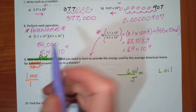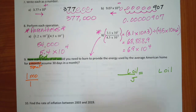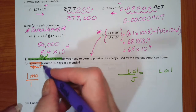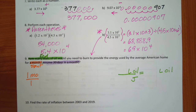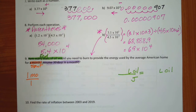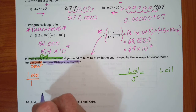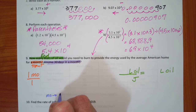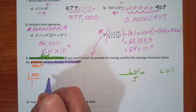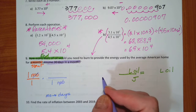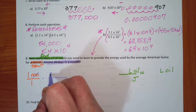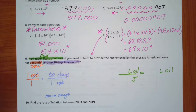There's a note in the problem: assume there are 30 days in a month — so that's going to come in handy. I'm going to convert the month to days. I put the month on the bottom so those units cancel, and it says there are 30 days in a month.